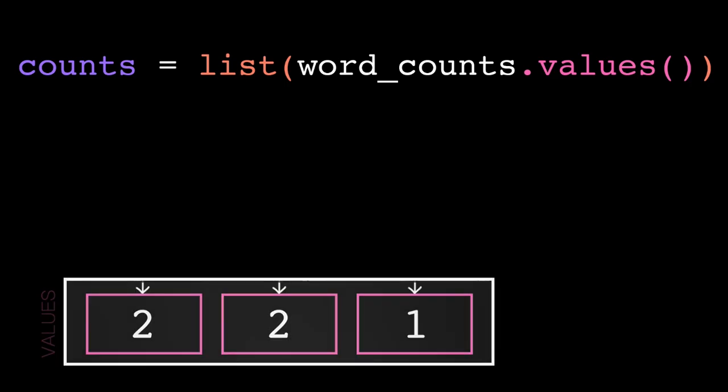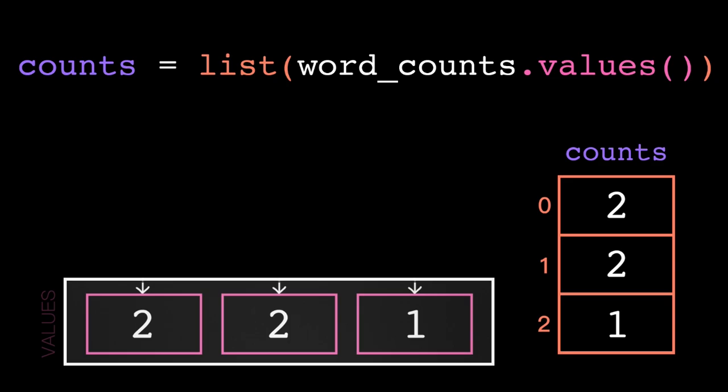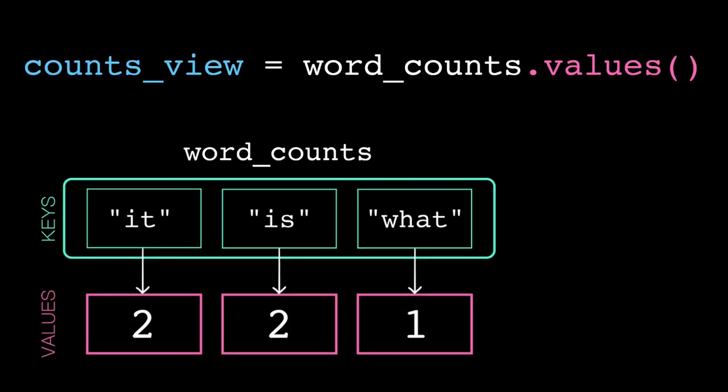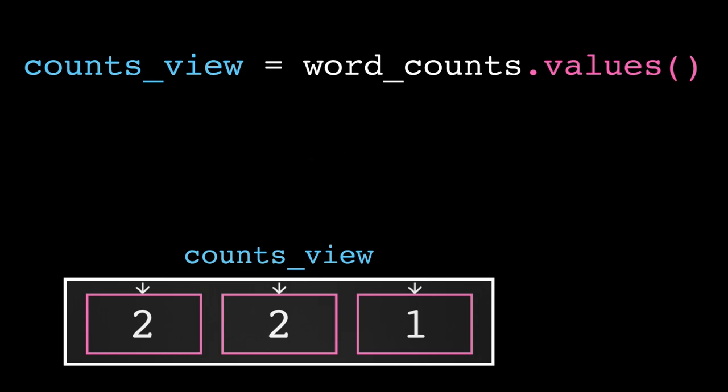In fact, it's not optimal. As soon as we cast this dictionary view to a list, the computer copies over all of these values to a new location in memory. Whereas if we just use the dictionary view directly, we're just peeking at the memory where the original dictionary is stored.